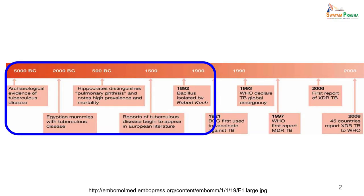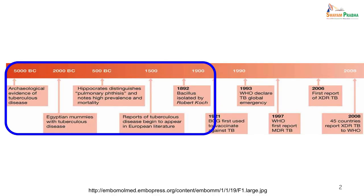Tuberculosis is not really new and dates back to 5000 BC when it was found in many archaeological places. Egyptian mummies have shown evidence of tuberculosis as far back as 2000 BC. In 500 BC, Hippocrates also mentioned pulmonary phthisis. In the year 1500, there were reports of tuberculosis from European literature, and in 1882 the bacillus was isolated by Robert Koch.